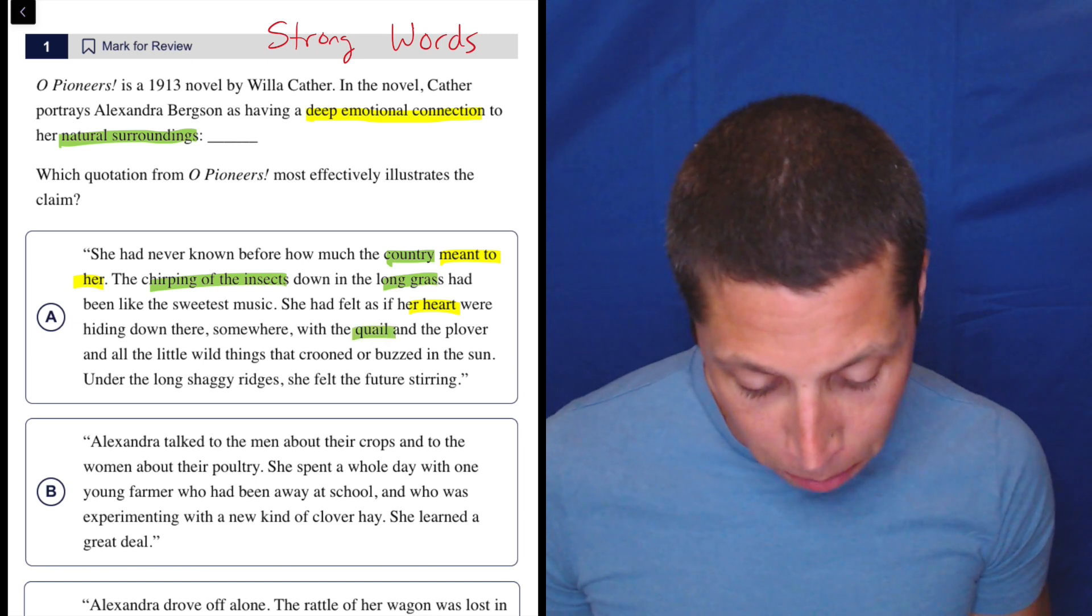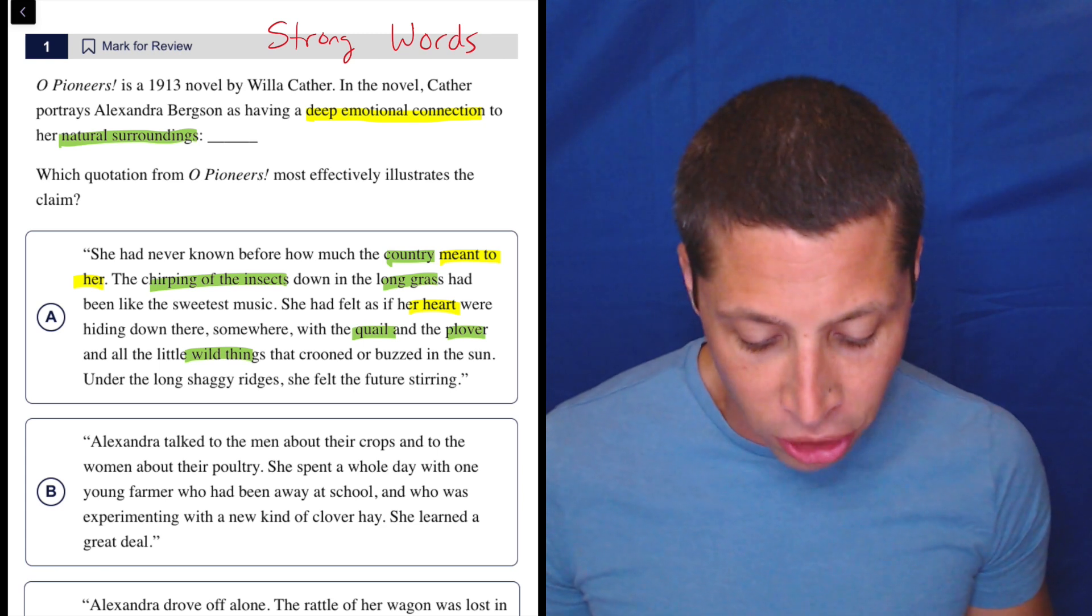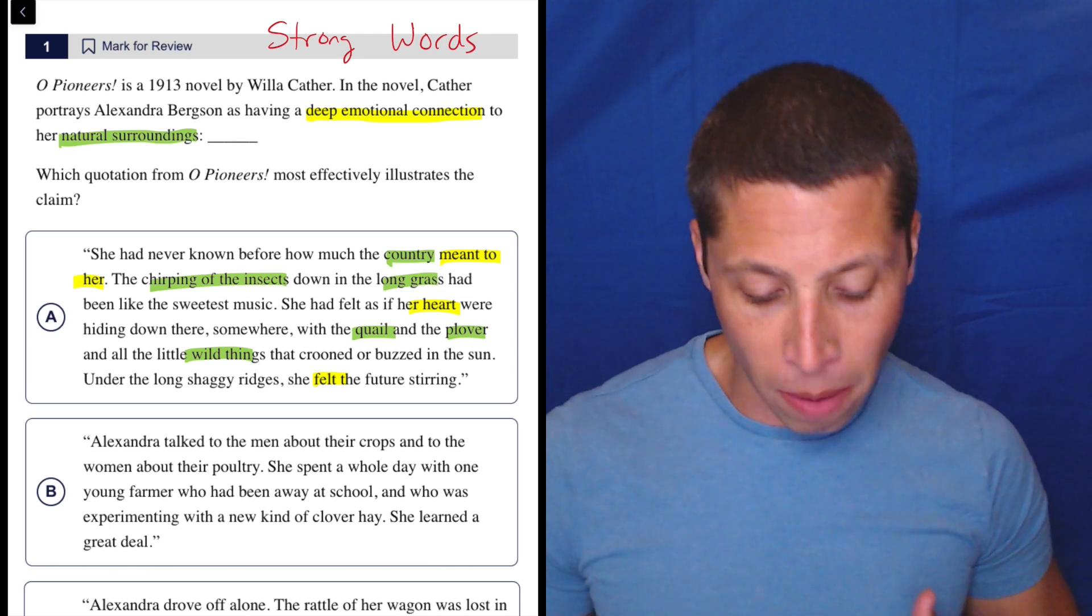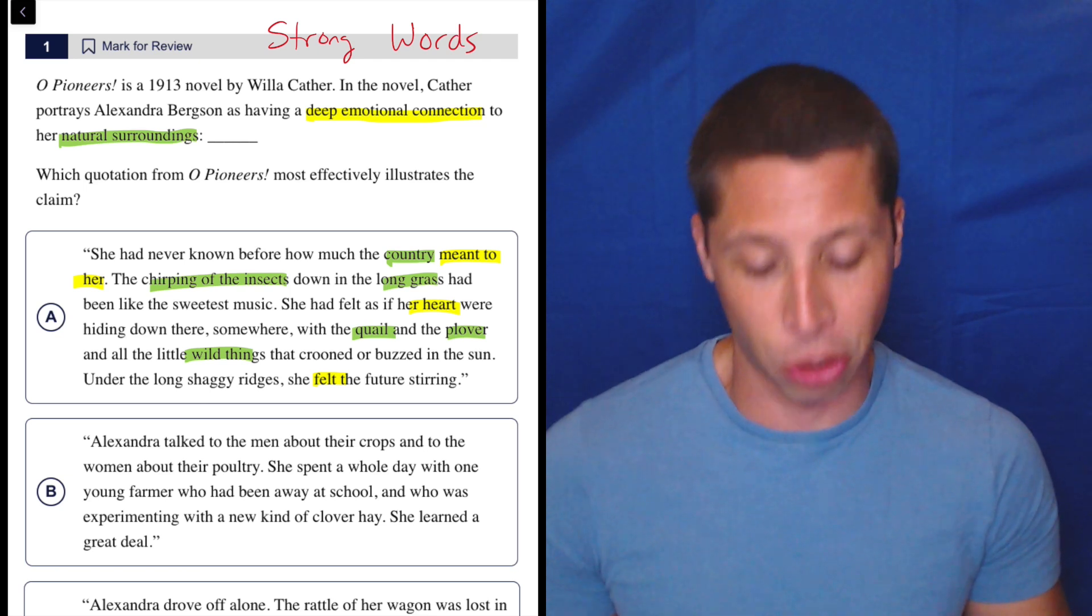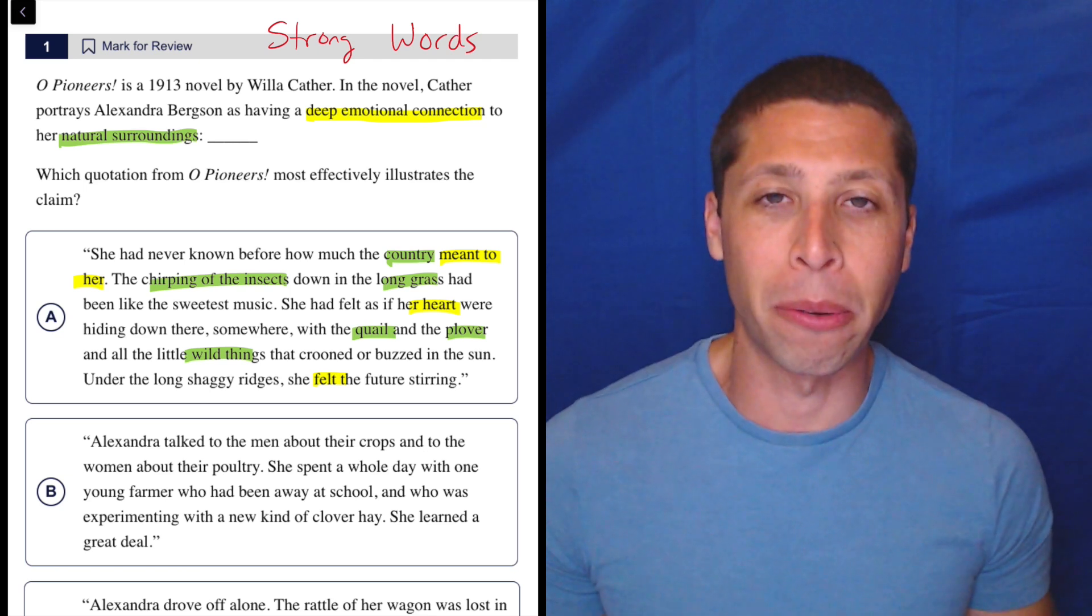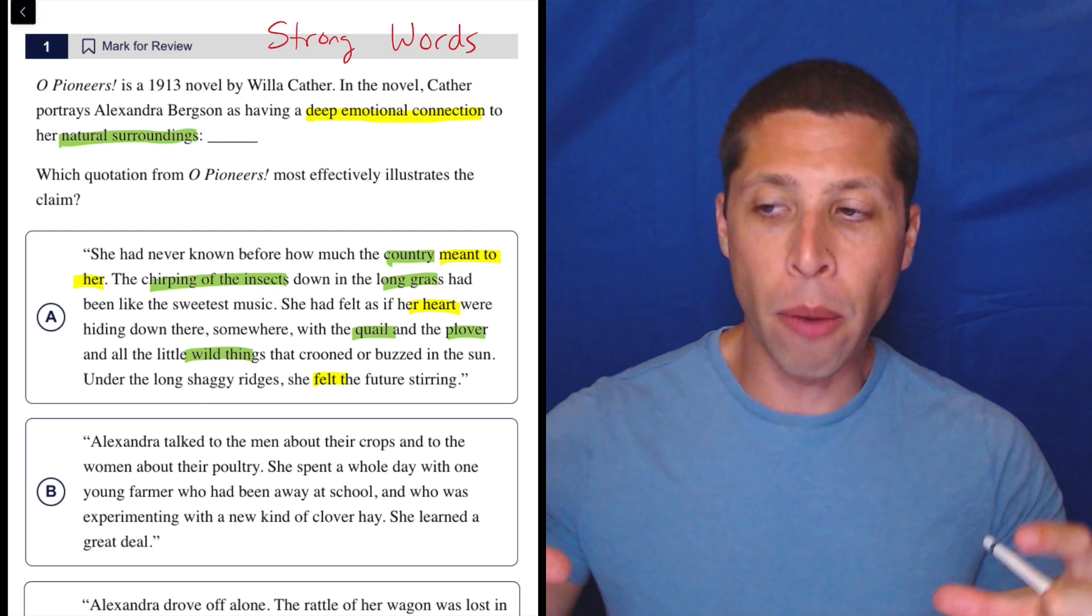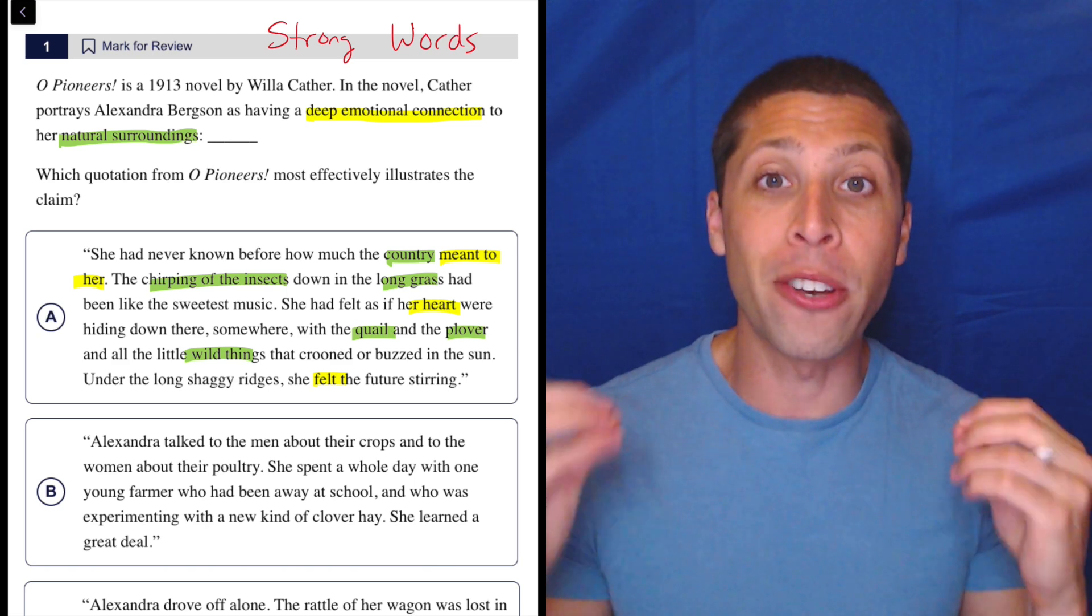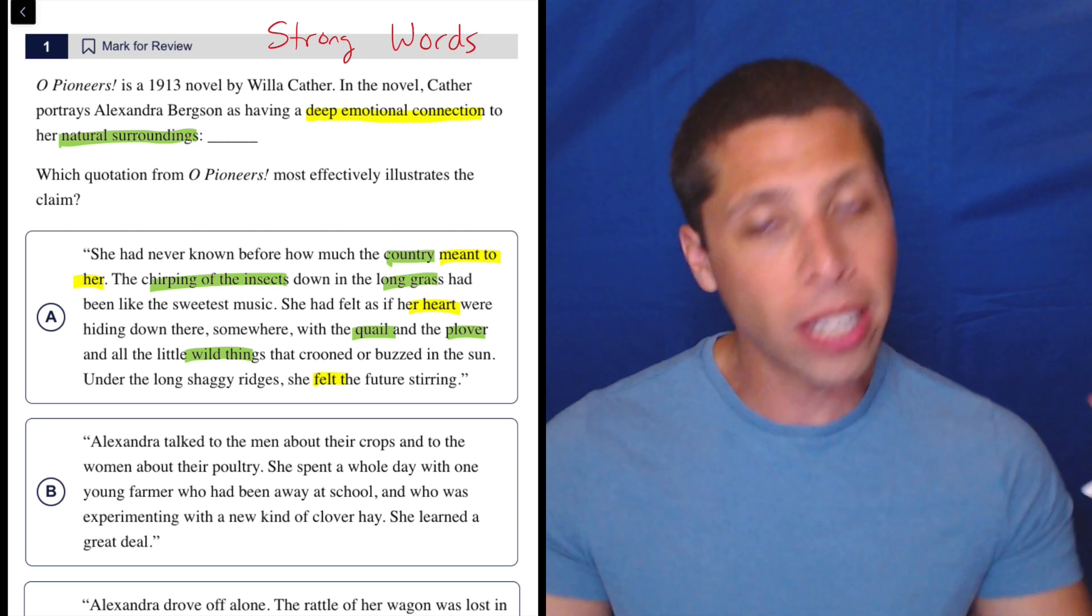Somewhere with the quail and the plover, so quail is a bird, plover I guess is a bird, and all the little wild things that crooned or buzzed in the sun. Under the long shaggy ridges, she felt the future stirring. I don't really know what that means, but she feels something in her heart. It meant something to her. This sounds like a deep emotional connection. I'm not 100% sure, but there's a lot there that kind of connects. It's so obvious to me that those are connections. It's not so much that we need to understand this choice as a whole. We need to be able to break it up and notice when there are certain phrases that match the ideas that are in the claim.